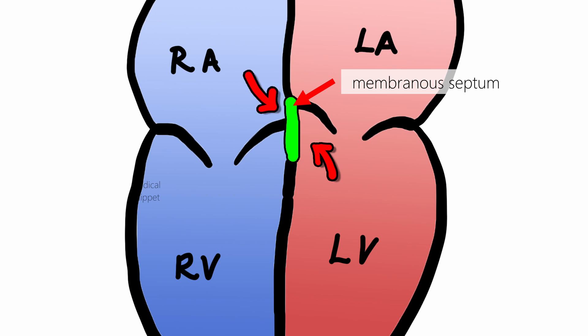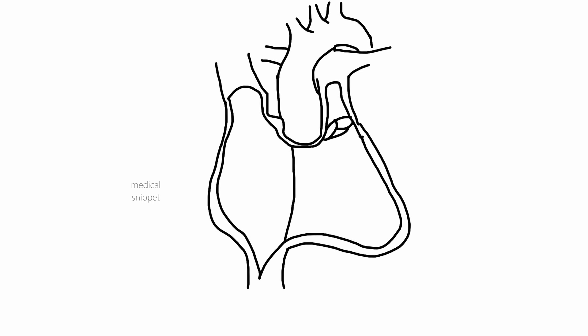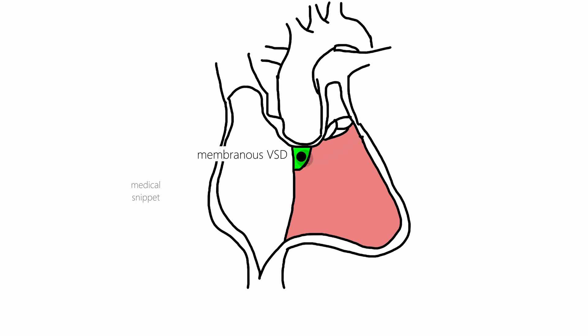This completes the development of the interventricular septum. Abnormality in its development leads to ventricular septal defect, or VSD, which can be classified anatomically according to the part of the interventricular septum involved. If there is a defect in the membranous part of the septum, it is called membranous VSD. If the membranous VSD extends into the adjacent muscular part, it is called perimembranous VSD.